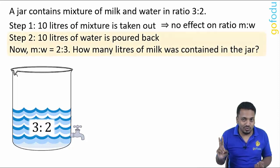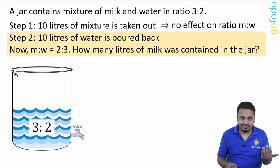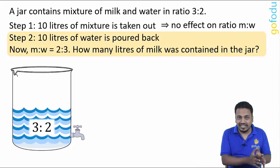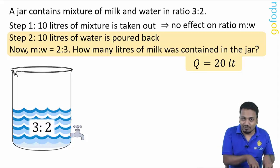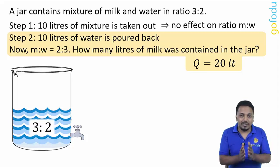Step 2 is the same question that we have solved before. We got the answer is 20 liters. On adding 10 liters of mixture removed in step 1, final initial mixture will be 20 + 10 = 30 liters.